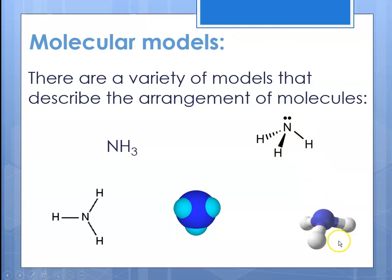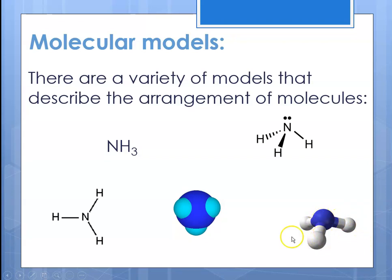The last type is a ball-and-stick model, which you may have used in junior high with the little wood balls and sticks. That would again show ammonia — the nitrogen and the three hydrogens.